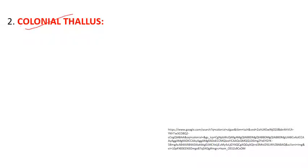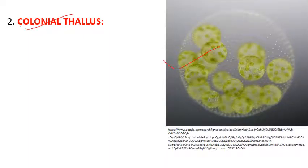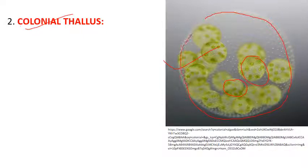Next, colonial thallus means more cells are present, attached to each other by a slime-like substance, forming a colony. Daughter cells divide but do not separate — they remain attached to the parental body forming a colonial form. We can see one Volvox colony here; they have a common slime layer outside and form a large colonial form.